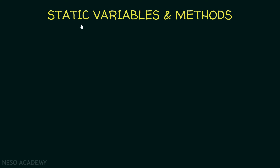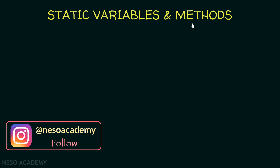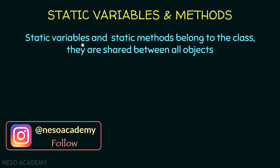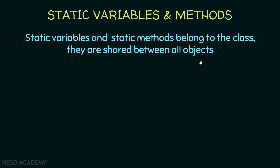Static variables and static methods belong to the class — in other words, they are shared between all objects. The radius belongs to the object, not the class, and it is not shared. But static variables are shared; they belong to the class, not to the object.